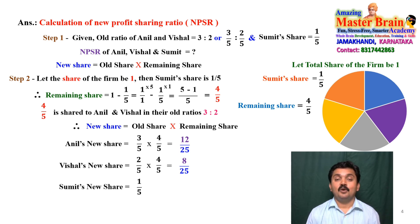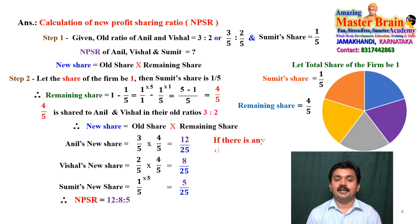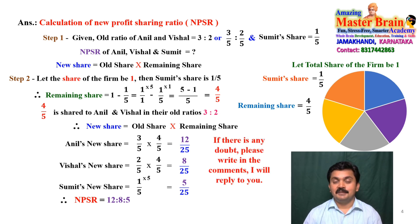Sumit's share is 1/5, which we write with 25 as the base, giving 5/25. Therefore, the New Profit Sharing Ratio (NPSR) of all the partners is 12 : 8 : 5 for Aneel, Vishal, and Sumit respectively.